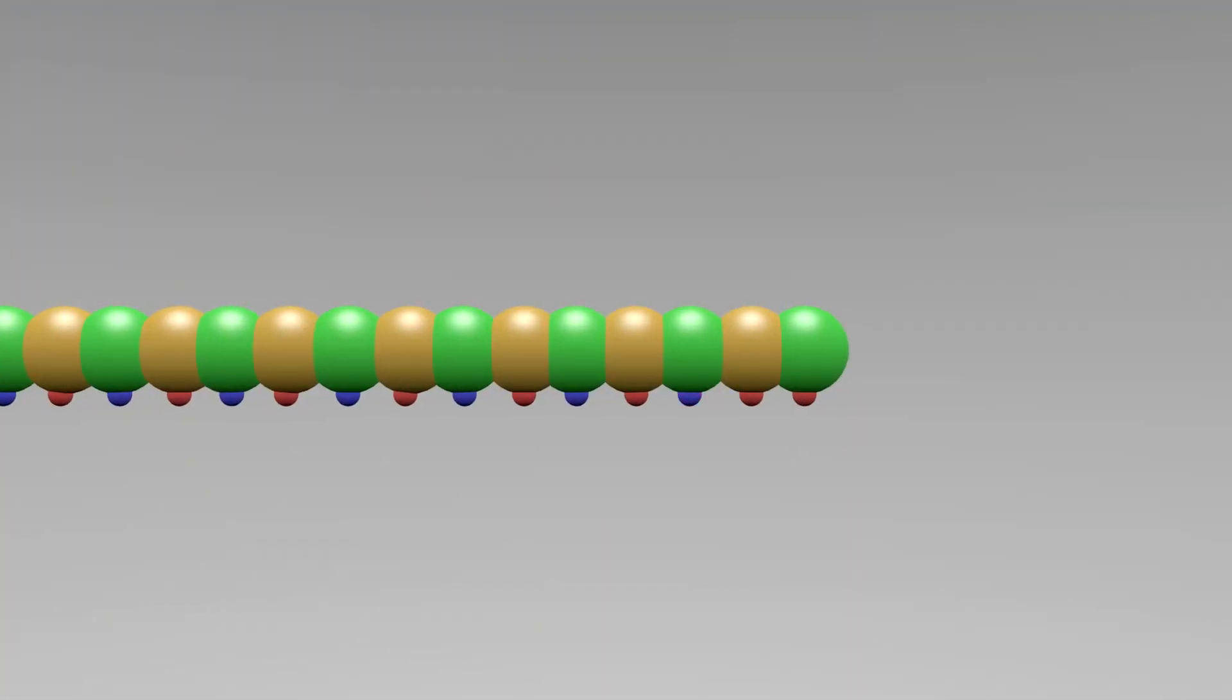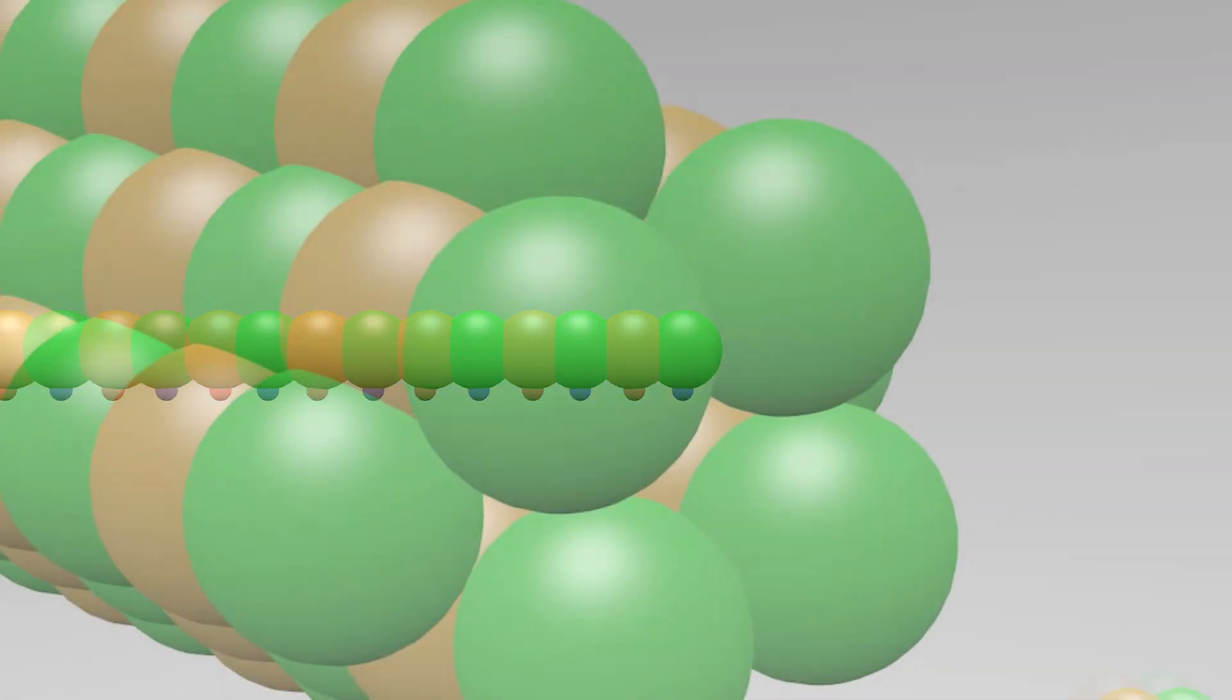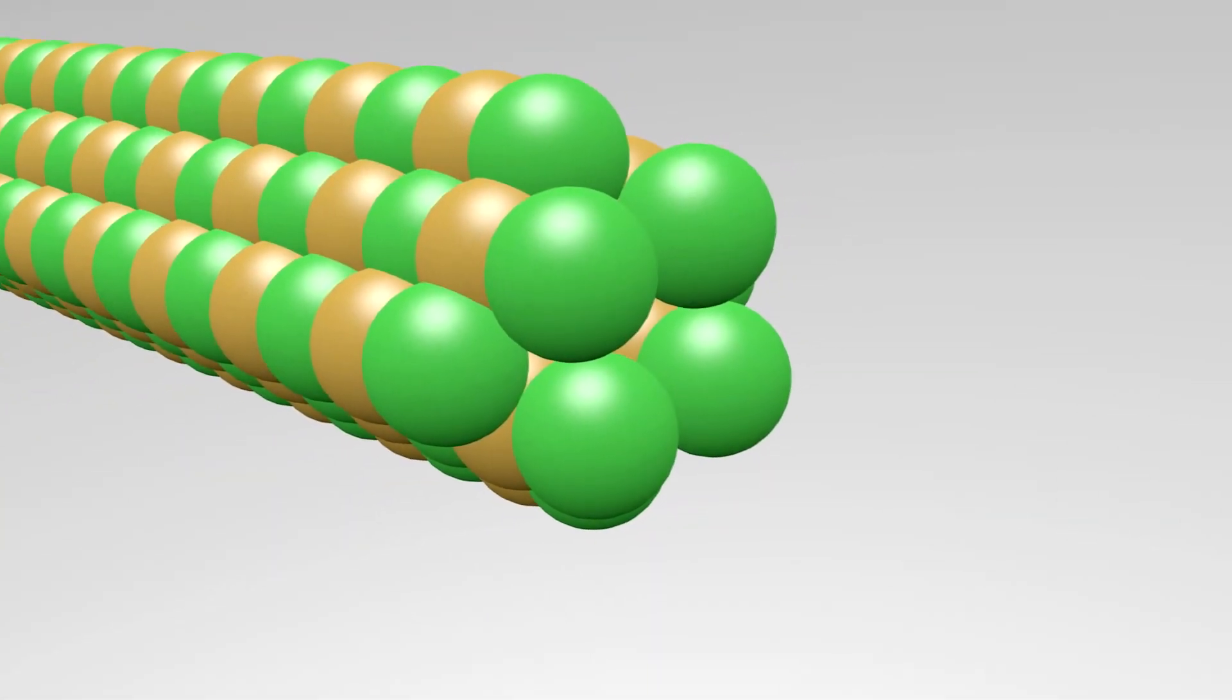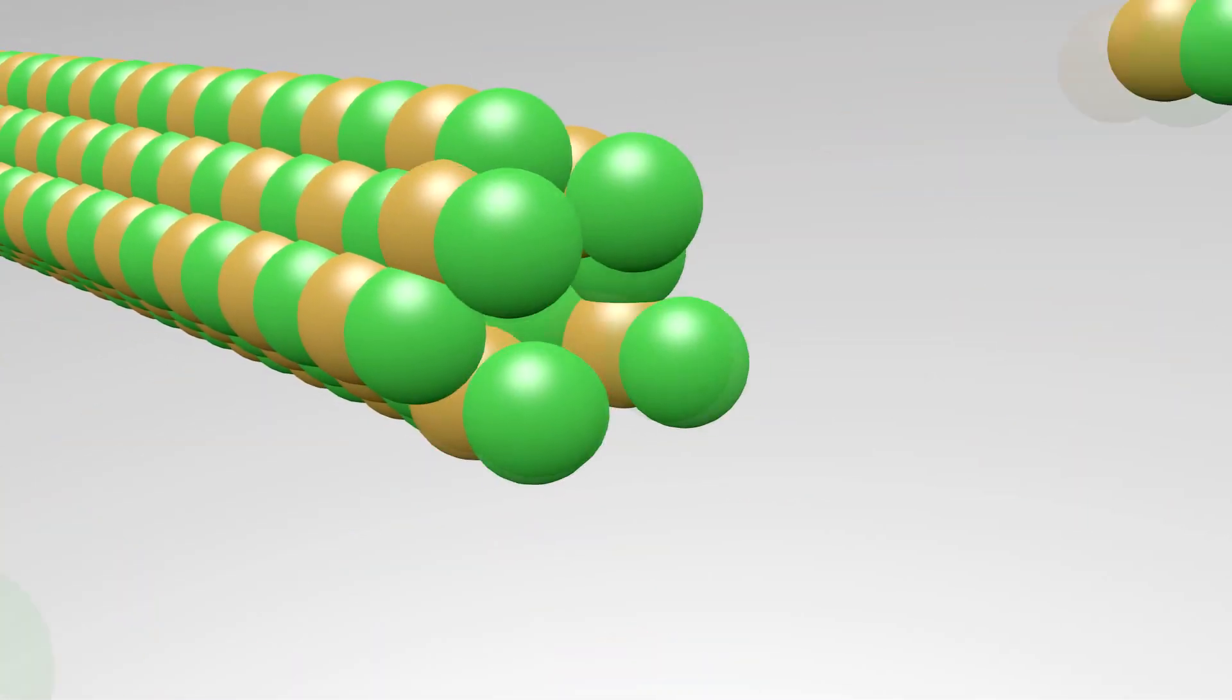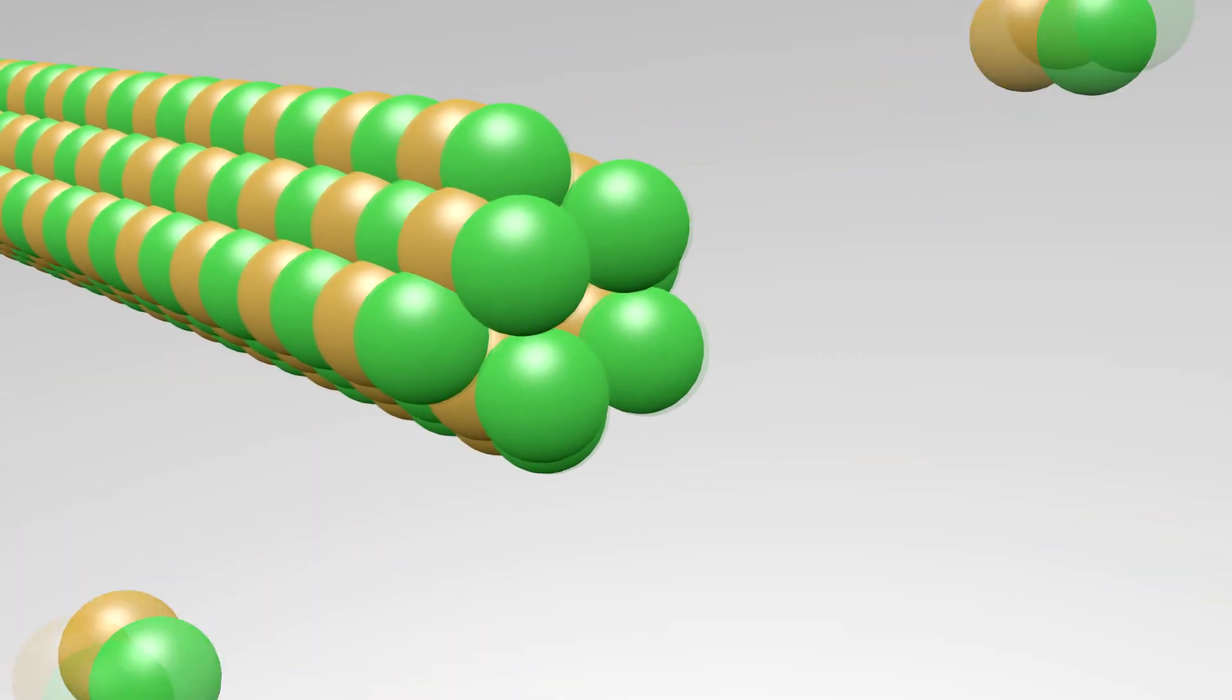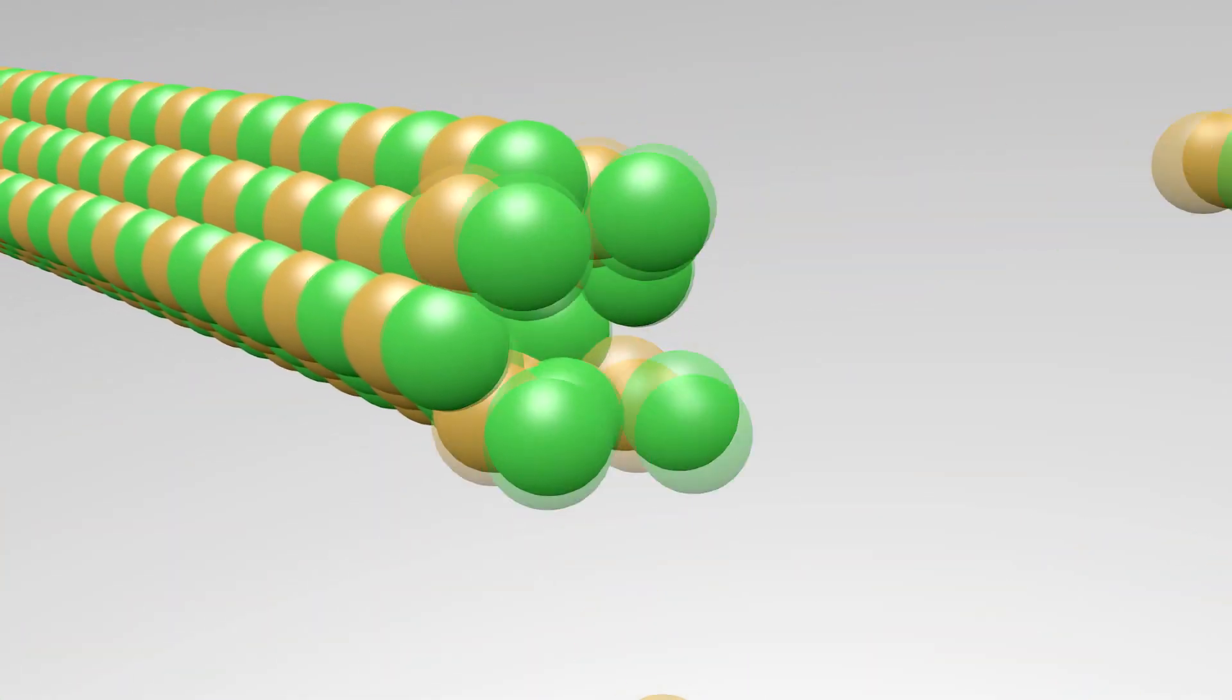What happens when the tubulin slows in binding to the GTP cap? Catastrophe occurs when the rate of new tubulin dimers being added slows down. The GTP on the GTP cap will eventually be hydrolyzed into GDP before a new tubulin dimer is added. When this happens, the microtubule comes apart.